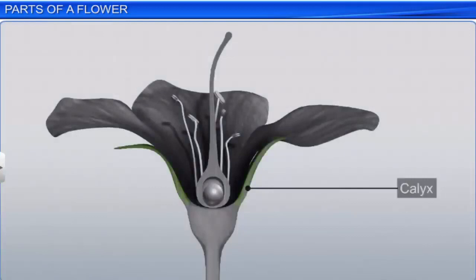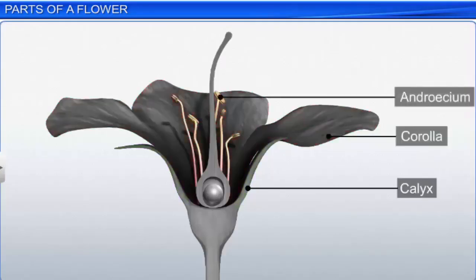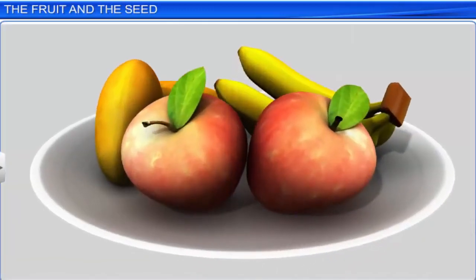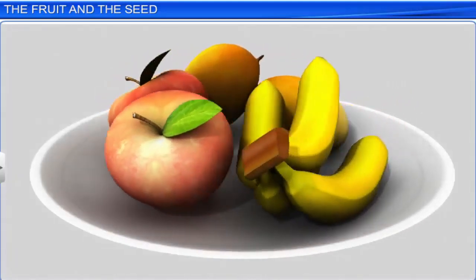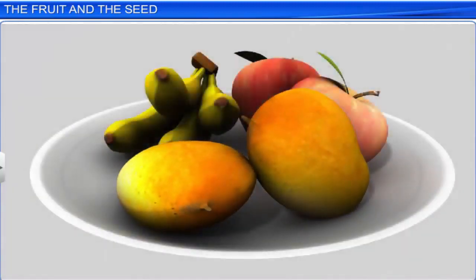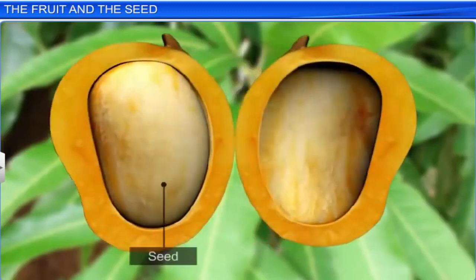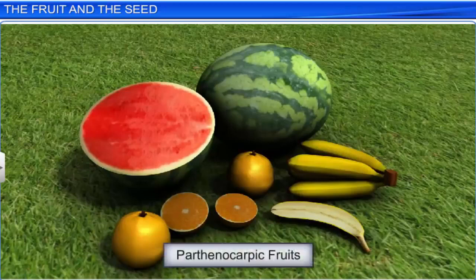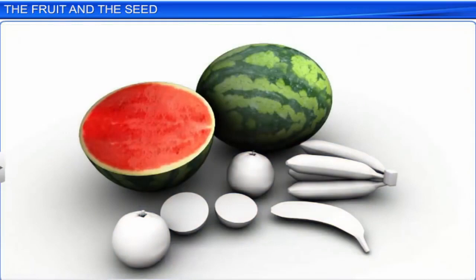The calyx, corolla, androecium, and gynoecium are the four whorls of a flower; the calyx and corolla are the accessory whorls, while the androecium and gynoecium are the reproductive organs. The word fruit makes one think of an apple, banana, or a mango. However, in biology the term fruit has a much broader meaning — it is a fertilized ovary with seeds. Certain fruits are formed without fertilization of the ovary and are therefore seedless; such fruits are called parthenocarpic fruits, such as seedless watermelon, banana, and orange. Parthenocarpy can be a natural process or may be artificially induced.